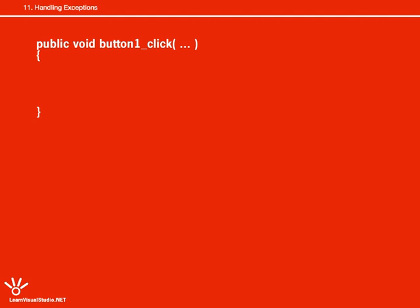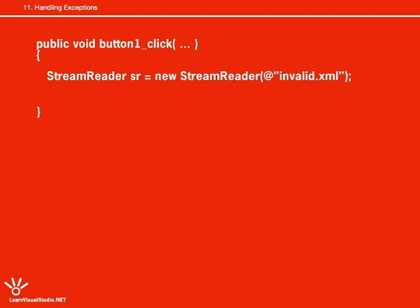What happens is that you have a method — let's say the button one click event. The event handler calls a method of some class in the .NET Framework. Building on the previous lesson, let's say this is the constructor of the System.XML.StreamReader class. We pass in an invalid file location to the constructor, and obviously there's a problem because the StreamReader class can't continue on, so it throws an exception.